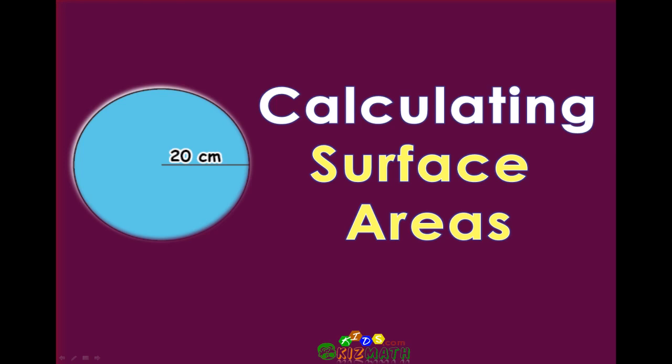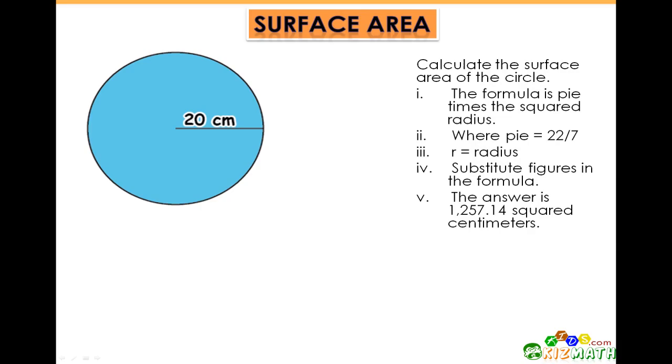Today we're going to look at calculating surface areas. Let's begin with the surface area of a circle. The formula for the surface area of a circle is pi r squared.